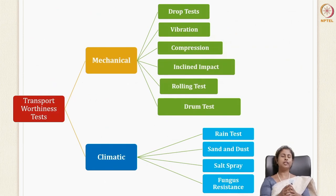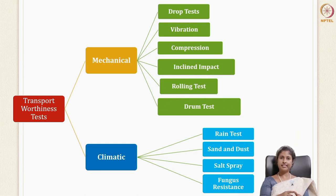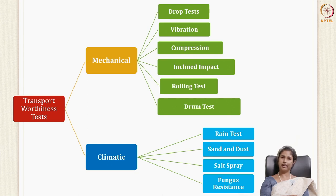When you talk about a transport worthiness test, these are tests which simulate and see if the package is going to withstand all the hazards it will face in real time. These are divided into two types: mechanical and climatic. Under mechanical you have the drop test, vibration test, compression test, inclined impact, rolling test, and drum test. The climatic ones are the rain test, sand and dust test, salt spray, and fungus resistance.